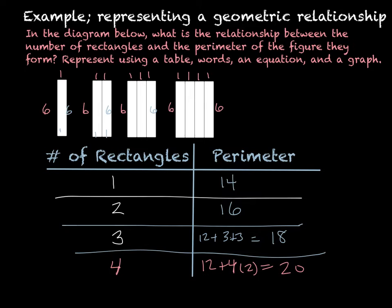So our perimeters are fourteen, sixteen, eighteen, and twenty, and that's how we complete the table. You don't have to show the work inside the table — just have the numbers for one, two, three, and four rectangles.